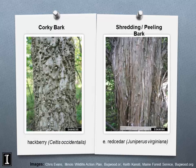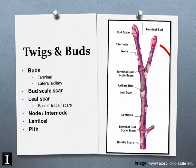Hackberry has warty, corky projections that become less discernible as the tree matures but are very prominent on young trees — an excellent way to identify hackberry. In southern Illinois, sugarberry looks virtually identical to hackberry; the easiest differentiation is fruit color — sugarberry has more orangish fruit while hackberry's is more purple-black. Eastern red cedar has shredding, fibrous bark.